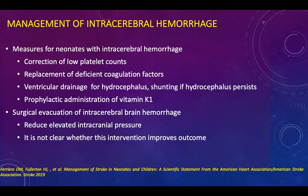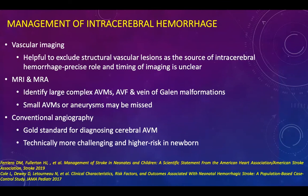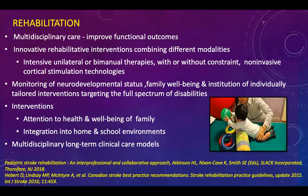For intracerebral hemorrhage, apart from general measures, treatment includes correction of low platelet count, replacement of coagulation factors, and vitamin K administration. Germinal matrix hemorrhage and intraventricular hemorrhage occur most often in preterm infants and treatment is supportive. Vascular imaging is helpful to exclude structural vascular lesions; MRI and MRA can identify large complex AVMs and vein of Galen malformations. However, small AVMs or aneurysms may be missed, and conventional angiography is technically challenging and rarely performed. Rehabilitation is very important as these infants can have long-term neurodisabilities and poor neuromotor outcome, needing comprehensive multidisciplinary care.